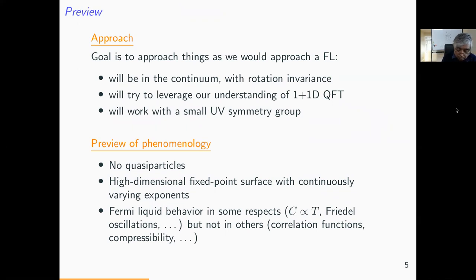So the plan of attack is as follows. We're going to approach this problem in a similar way to how we study the Fermi liquid. We'll work in the continuum with rotational invariance for simplicity. Like in the Fermi liquid, we'll use our understanding of quantum fields in 1+1 dimensions to construct something that lives in higher dimensions. We're going to work with a small UV symmetry group — maybe U(1) plus a few other things. As a preview of the phenomenology: we're going to find phases without quasiparticles, with continuously varying exponents for correlation functions — in some senses bosonic analogs of Fermi liquids, but in other senses rather different.